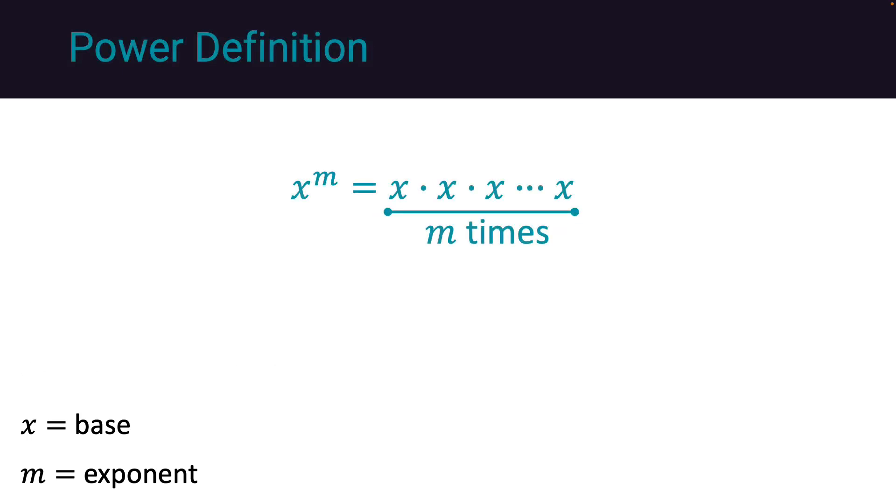Let's define a power. A power is a value that is multiplied by itself m times. This is represented with an exponent m to indicate the number of times x is multiplied. For example, 2 to the power 3 means 2 multiplied by itself 3 times, which is equal to 8.